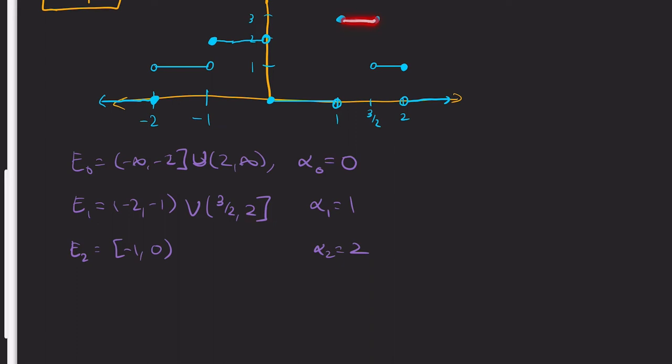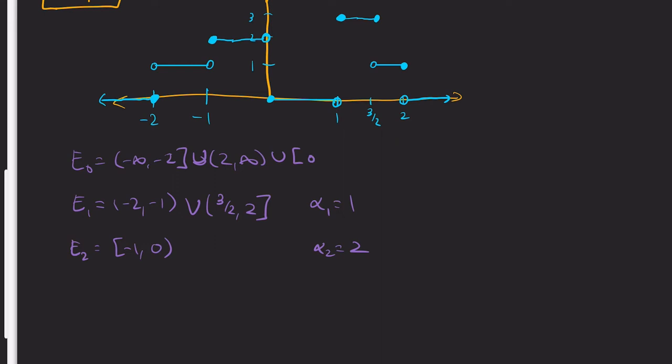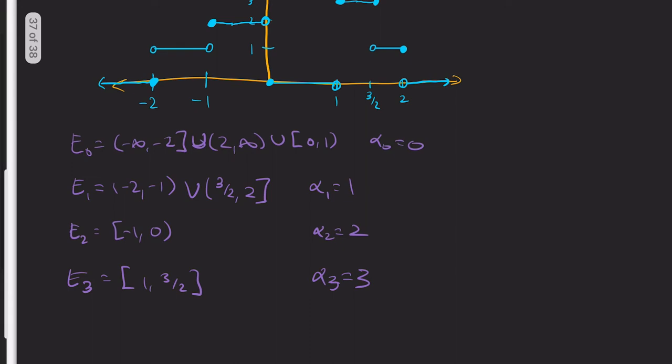And finally, it's equal to 3 on this set. Oh sorry, I forgot a section where it's equal to 0. I forgot this section - it's equal to 0 here also. So this is union 0 to 1 open. E_3 is 1 to 3/2 closed. α_3 equals 3.